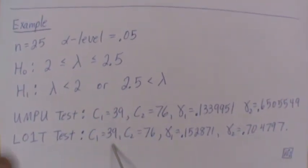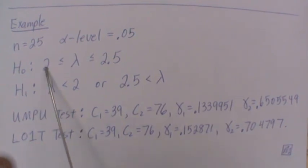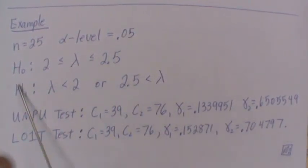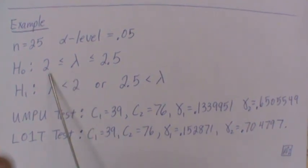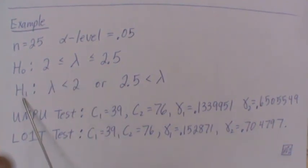So the example we're going to do in R is this. We're going to let N equal 25, the alpha level be 0.05. The null hypothesis is that lambda is between 2 and 2.5. The alternative is that lambda is less than 2 or it's greater than 2.5. And the UMPU test, the C1 value is 39, C2 is 76, and these are the cutoffs.